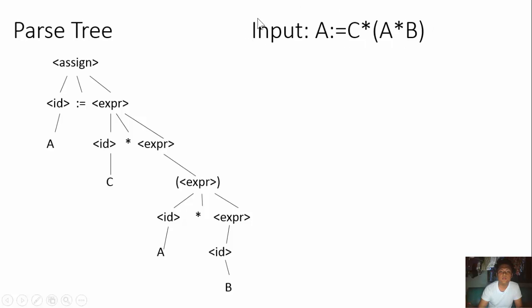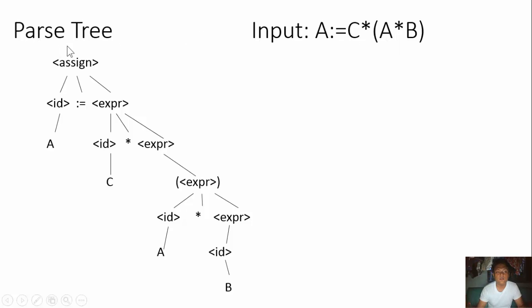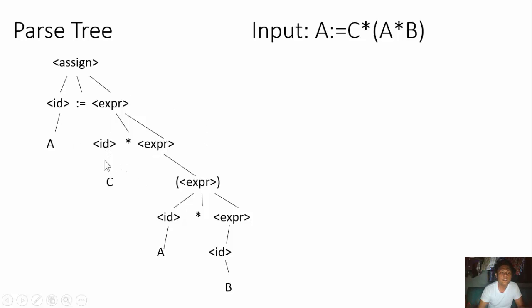This is the input: A is equal to C times open and close A times B. This is what we got on our parse tree — assign starts with ID, then expression. Our ID is A and our expression is ID times expression.